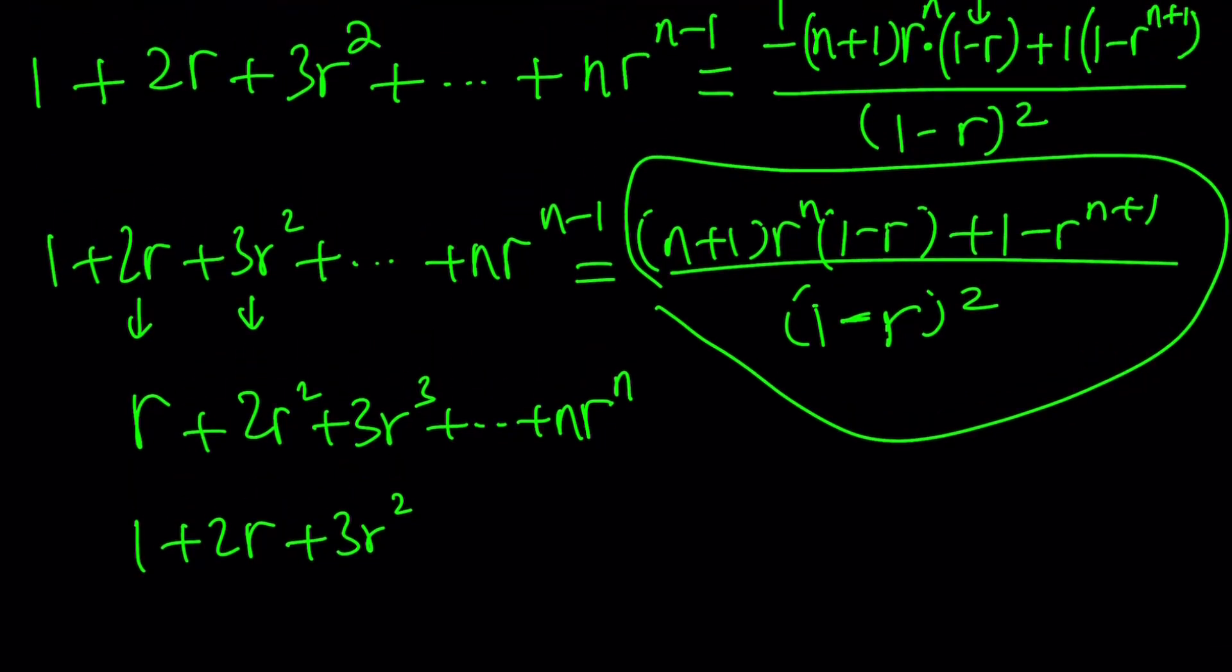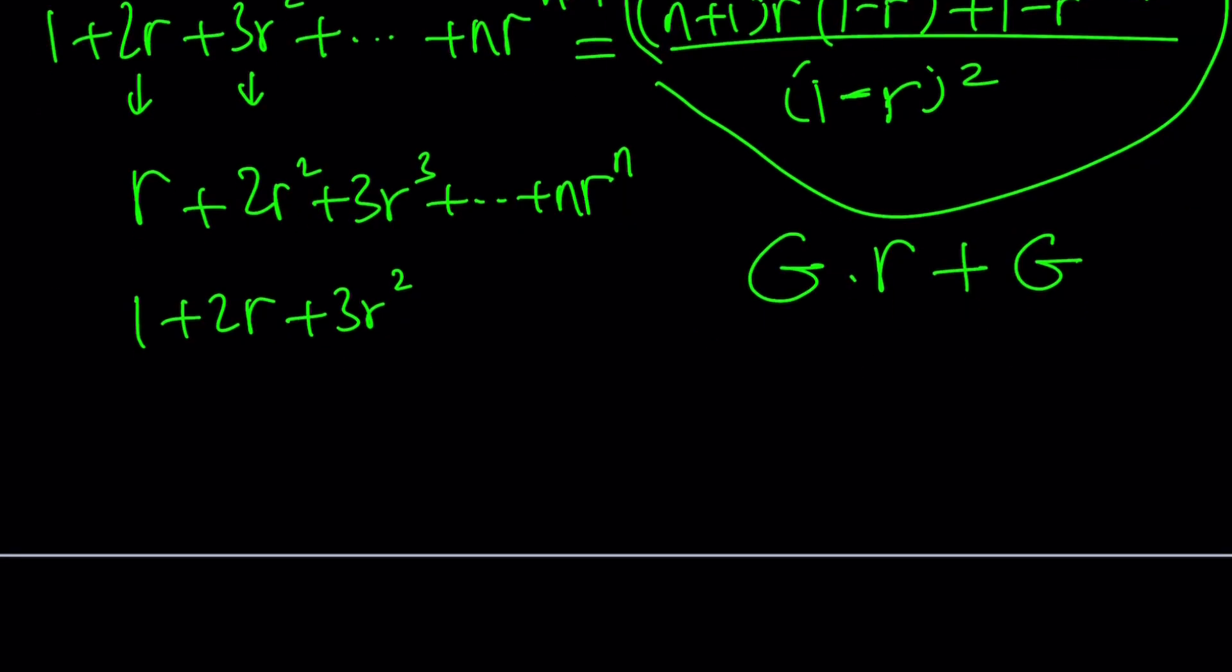But wait a minute. You're taking something gigantic. Let's call that g for gigantic. You're multiplying it by r and adding it to itself. It is equivalent to multiplying g by 1 plus r, so you might as well just multiply everything by 1 plus r. Anyways, this is too painful. Let me go ahead and show you what Wolfram Alpha gives us, and then we will conclude. All right, ready?